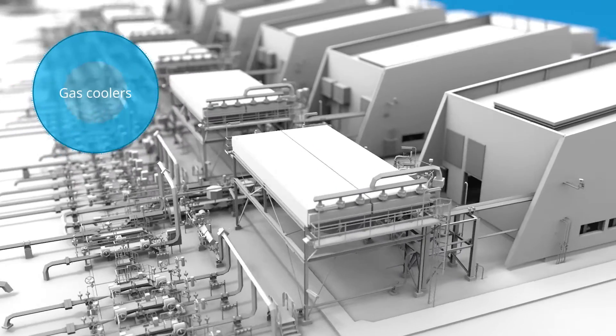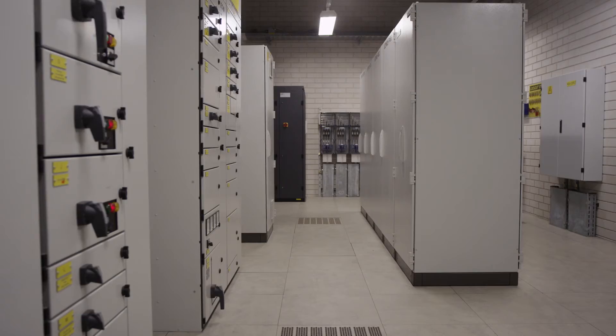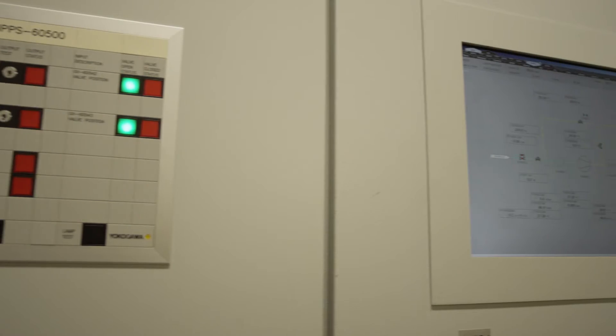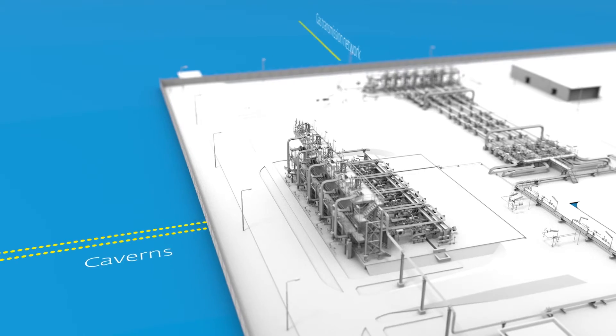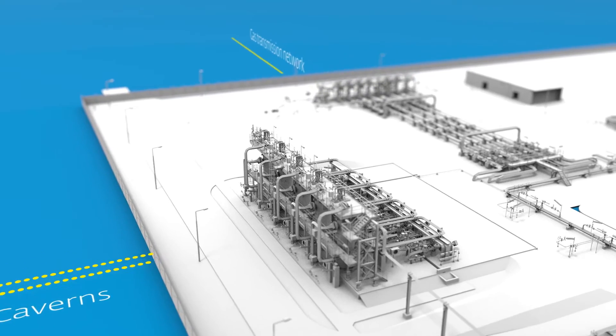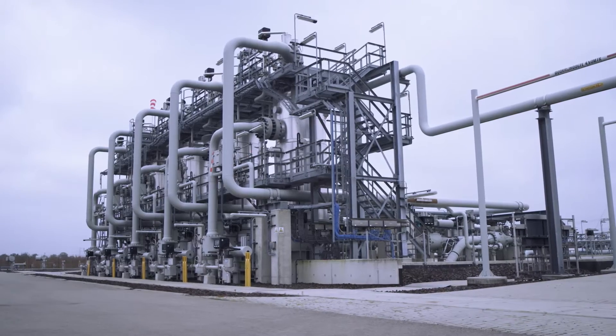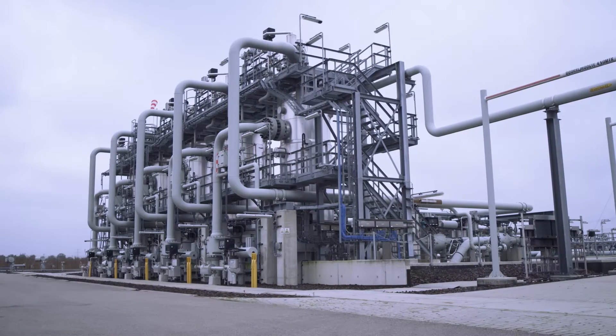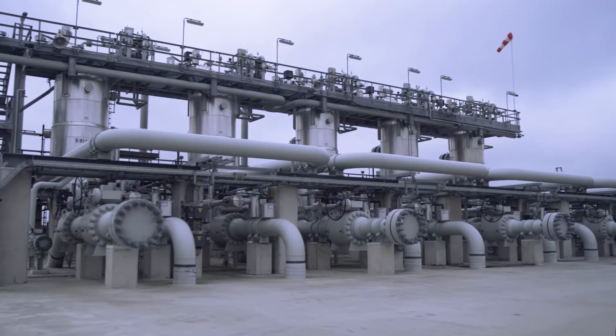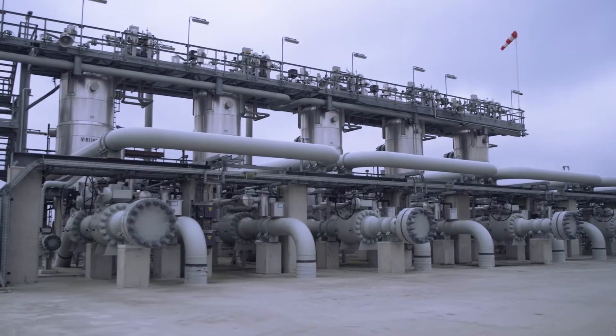The compressors are controlled by pressure regulating stations. Before the gas is supplied to the transmission network, it needs to be treated at the installation. The gas that is extracted from a salt cavern may contain solid particles and liquids. These solid particles are filtered out by sludge catchers.